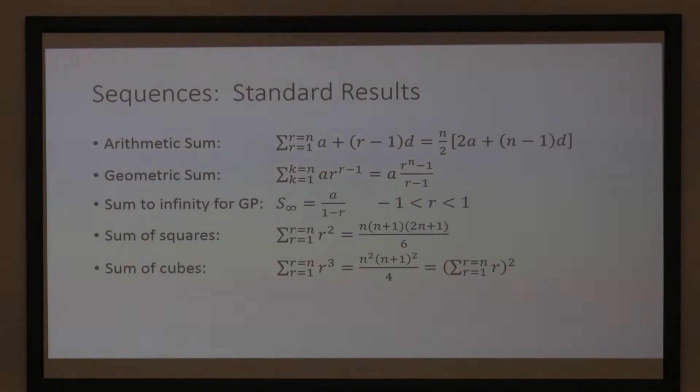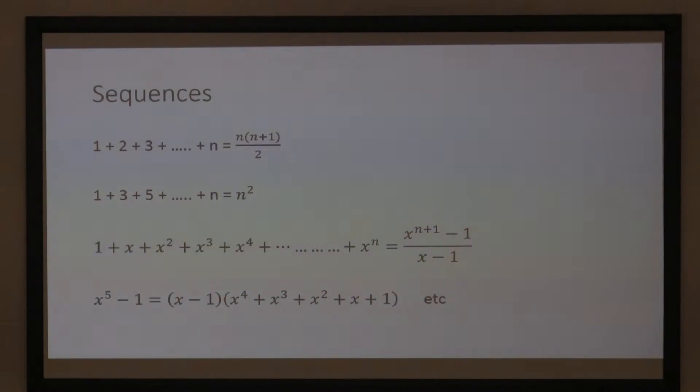And then, adding up cubic numbers, is n squared times n plus 1 squared over 4, which happens to be the square of the sum of the integers, which is an interesting result. Okay, so I've just added that in there. The sum of the integers, of course, is n times n plus 1 over 2.